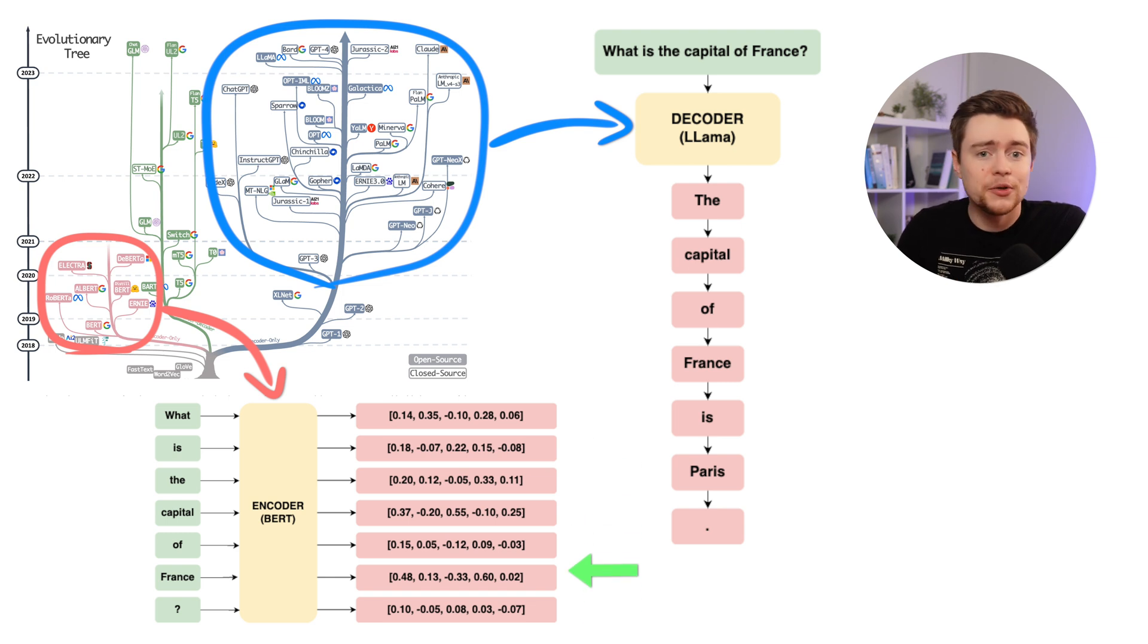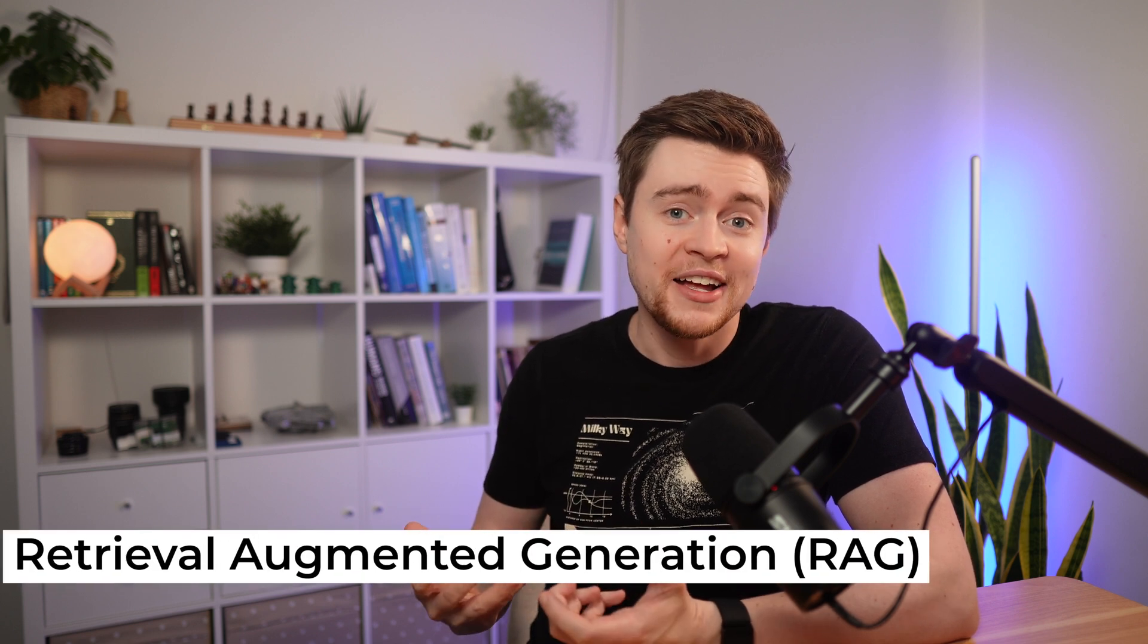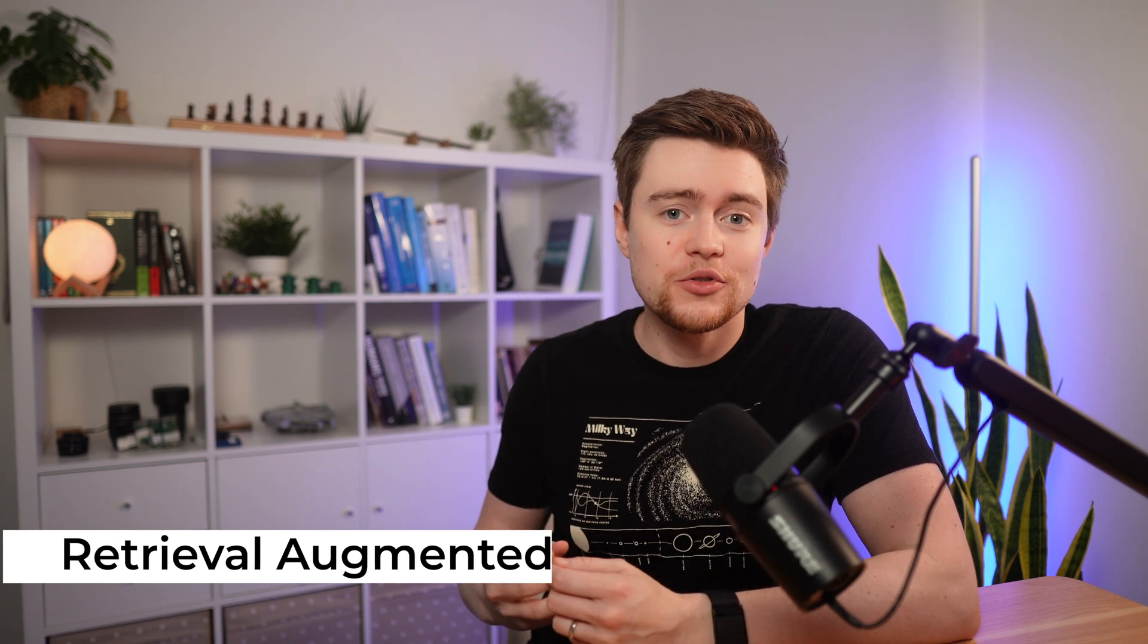For example, we can use it in Retrieval Augmented Generation, or RAG, to retrieve some additional context for our prompts. RAG is a very popular approach in AI now, so I will quickly show you how it works in this visualization taken from this blog post from Meta.